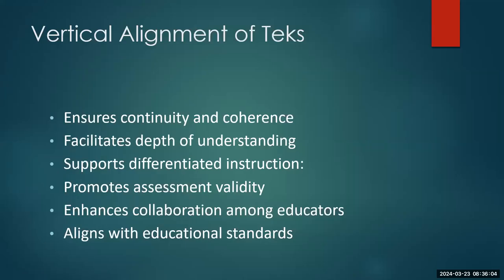Vertical alignment of TEKS — what is vertical alignment? Vertical alignment is making sure that what we're teaching in second grade is built on from first grade and then is ready to help them when they get into third grade. We want to make sure that each subject we're teaching helps them grow each year, getting a little bit deeper each year. We ensure continuity and coherence by aligning curriculum vertically, creating a clear pathway of learning progression from one grade level to the next, building on previously acquired knowledge and skills.